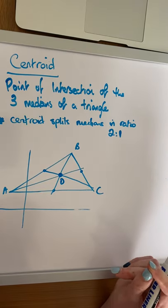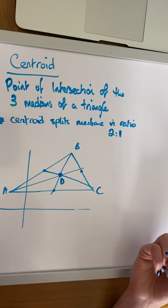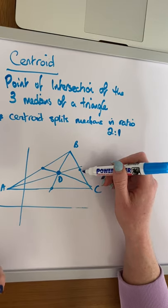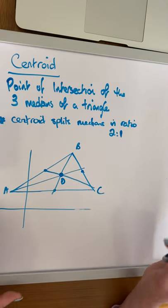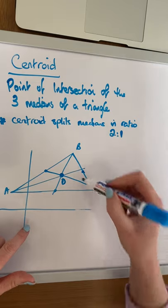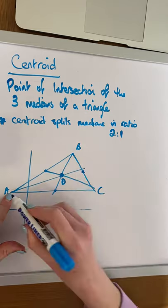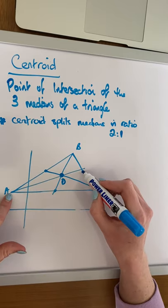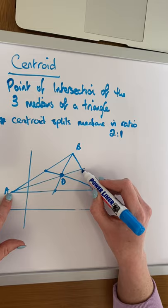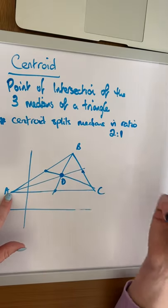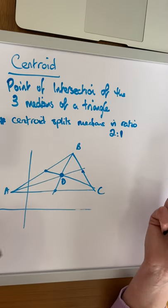We need to be able to find the centroid both graphically and algebraically. Graphically, you just find the midpoint of each side and connect it to the opposite corner — that's fairly simple. Algebraically, you find the midpoint of a side of the triangle, then create the equation of the line by finding the slope and using y minus y1 equals m times x minus x1, and then find the point of intersection of two of the medians. You don't need to do the third one, as the intersection of two will be the same as the intersection of all three.